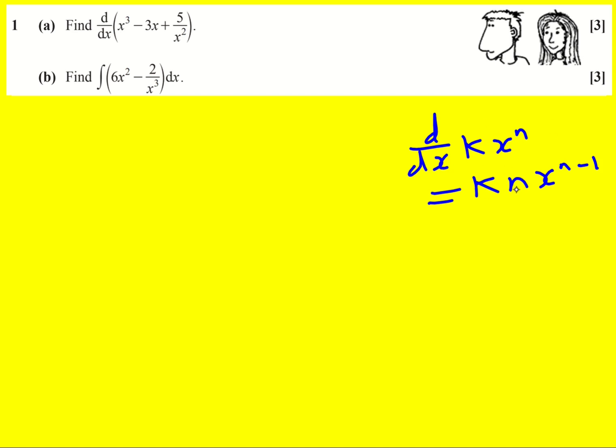The constant just carries through. So for part a, I'm going to get 3x squared, and then this one I get minus 3. That's a special case I'm not going to go into more detail on.